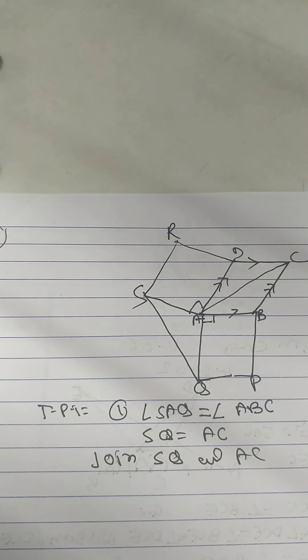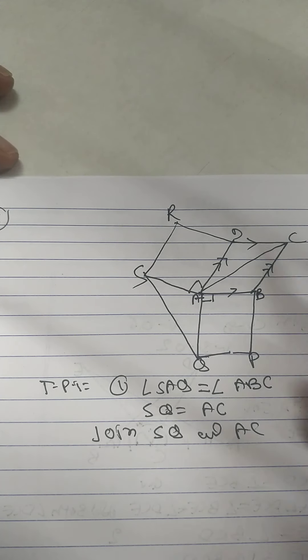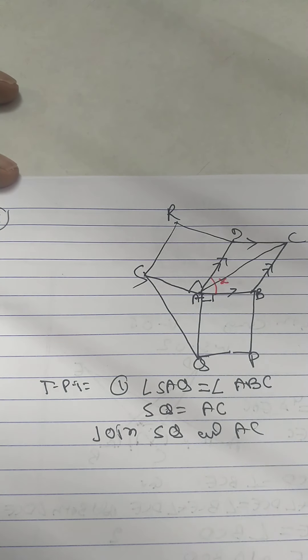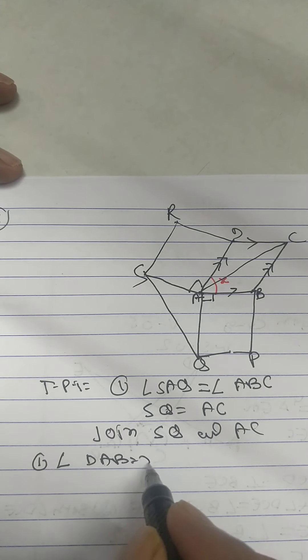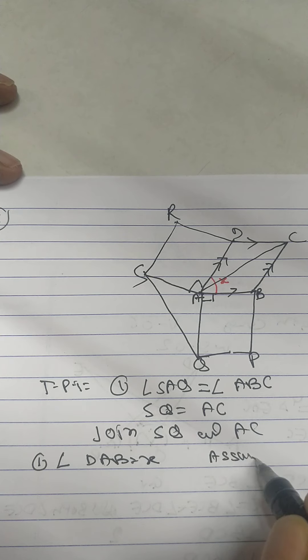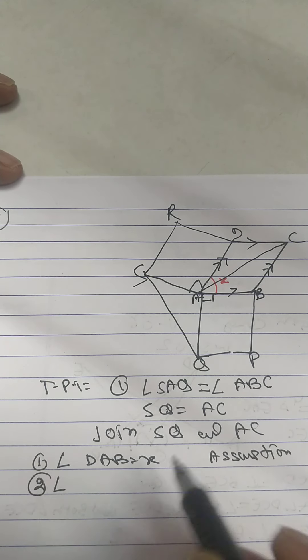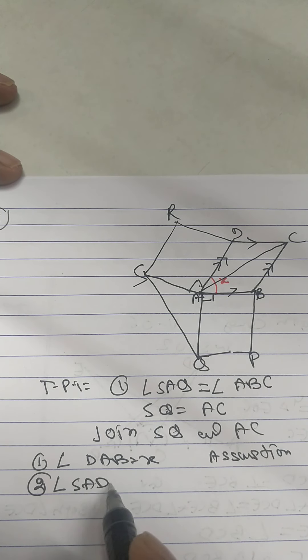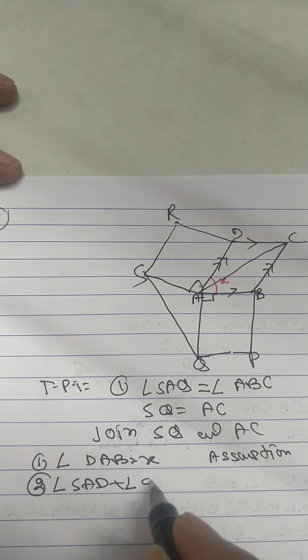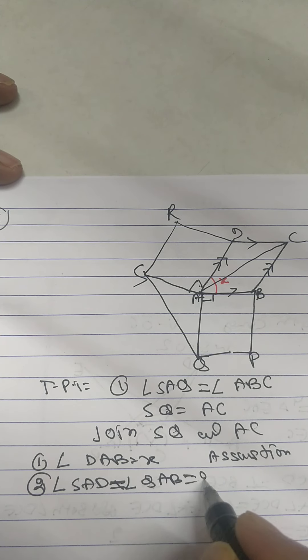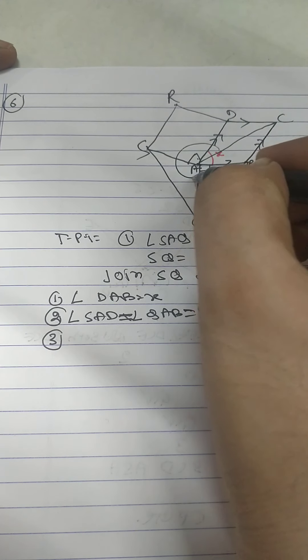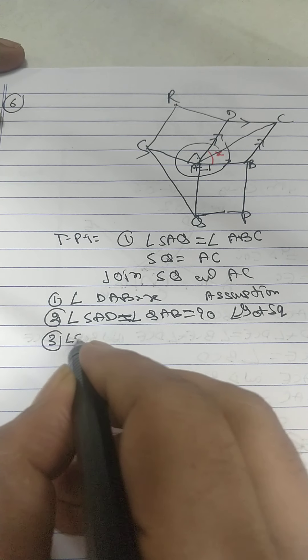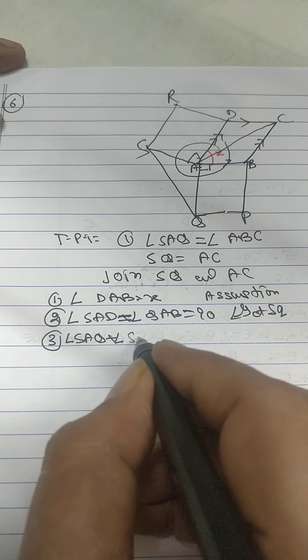Be careful here, you have to assume let this is X, angle DAB is X, assumption. Angle SAD plus QAB both are equal to 90, angles of square. You know angle at a point is 360.